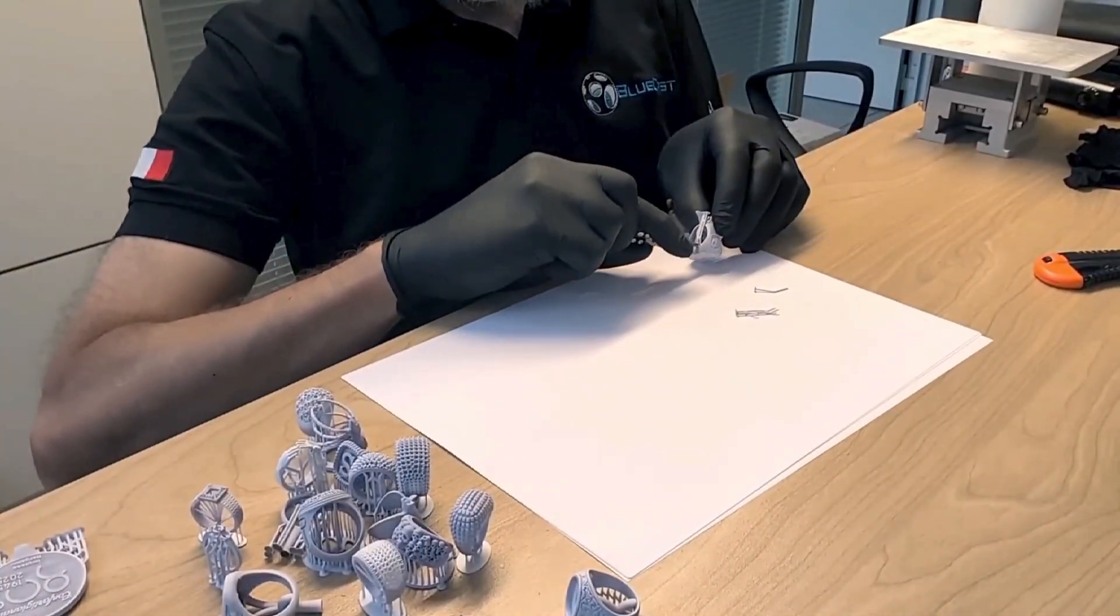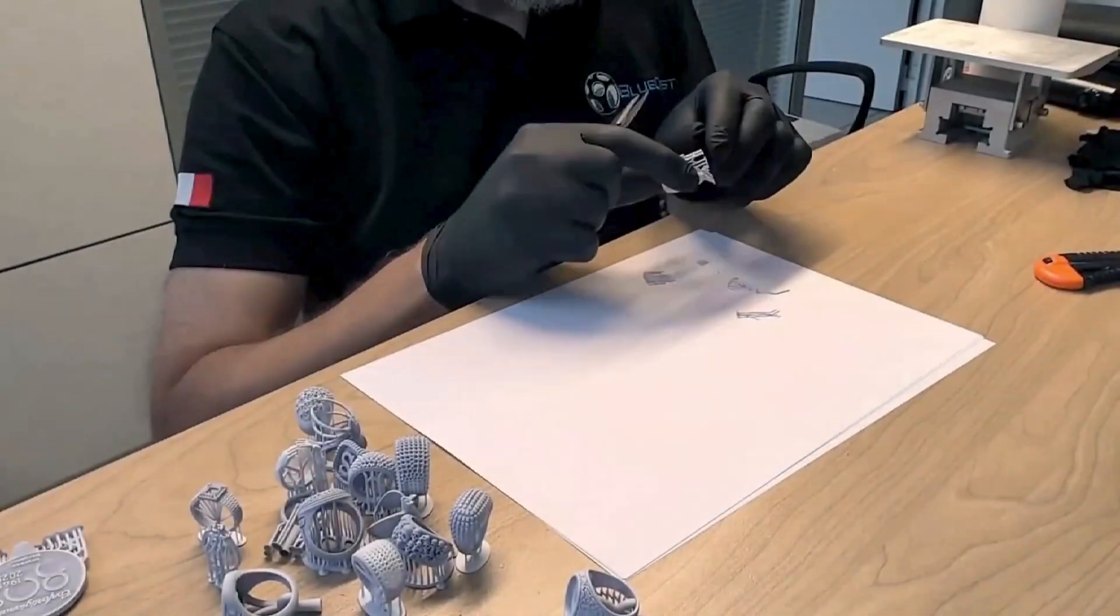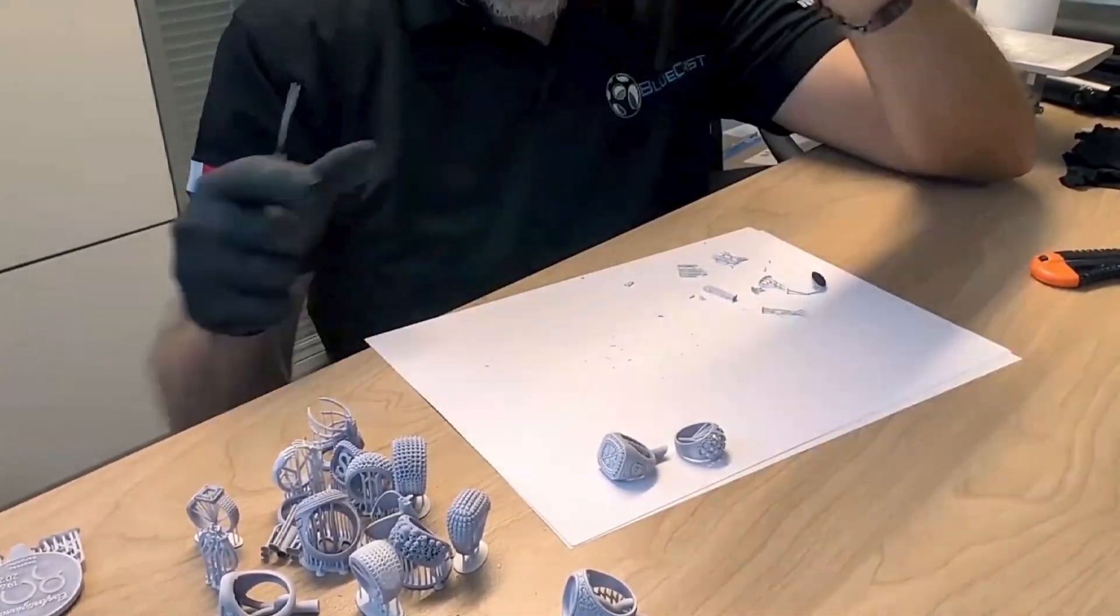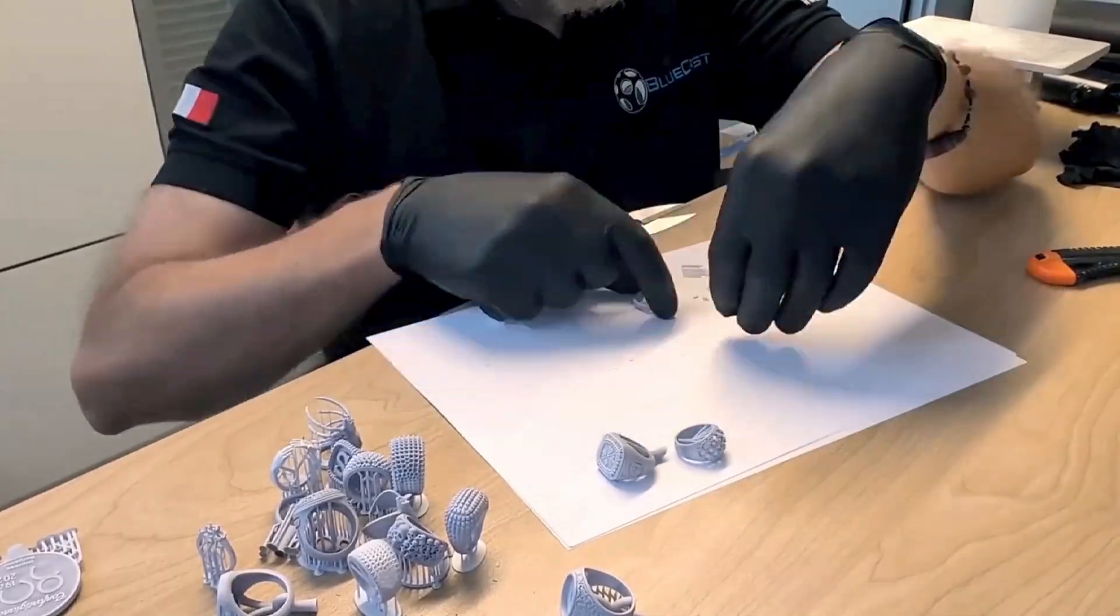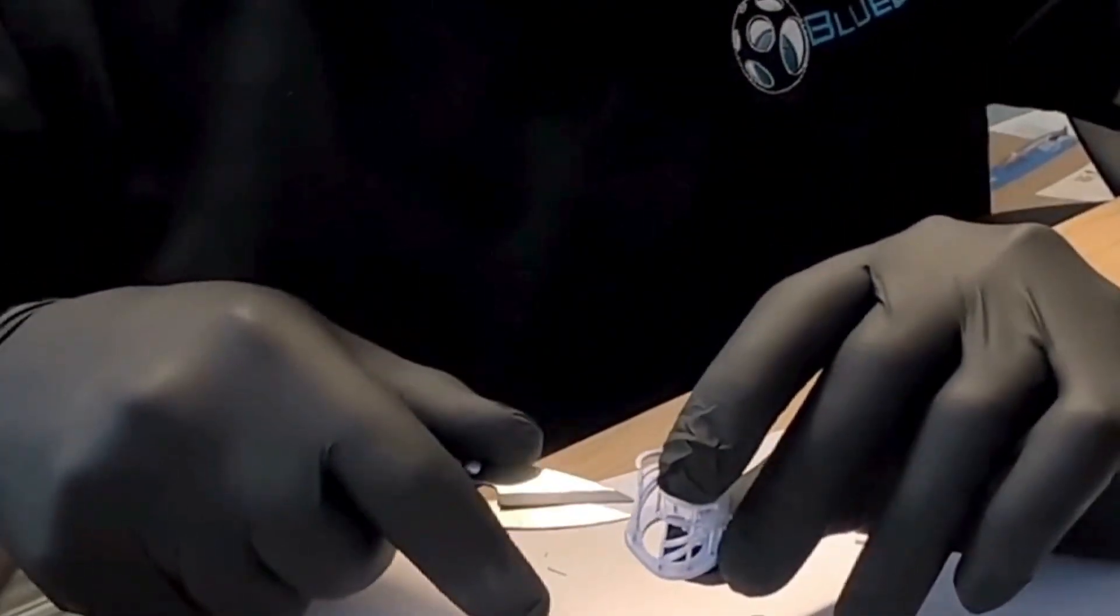Now I'll start removing the print supports from the models. Since this is a castable resin, good support is crucial. Good support is closely correlated with print quality. For this reason I strongly recommend using a sphere as the contact point. This will make it easier to remove the supports even by hand without damaging the models.